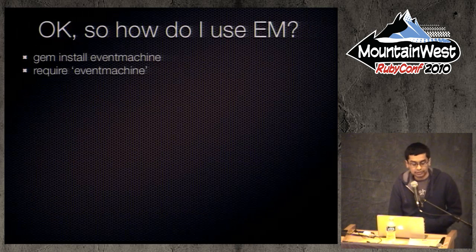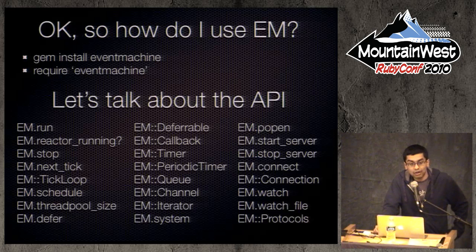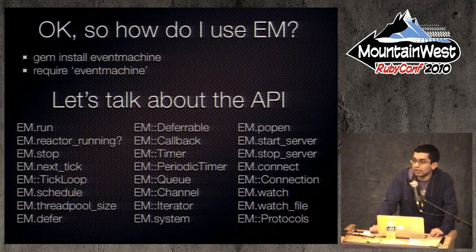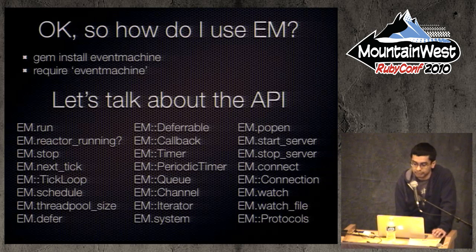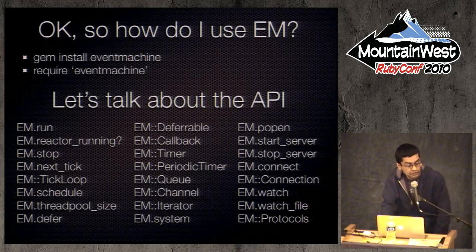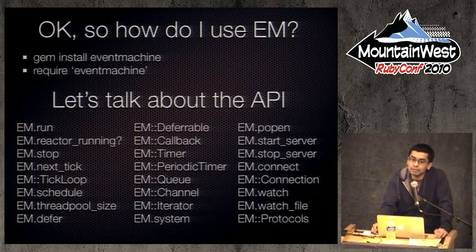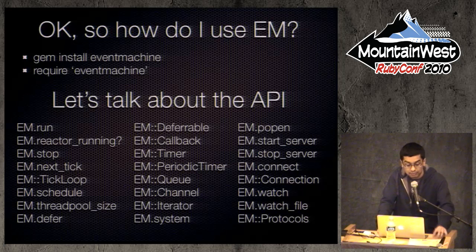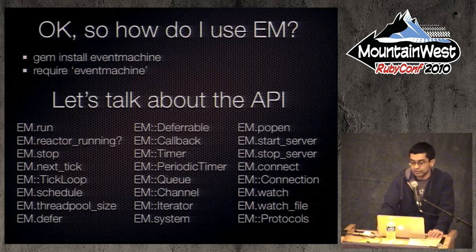How do you use Event Machine? Event Machine is just a gem — you can use it on Rubinius or JRuby. All you have to do is gem install, require it, and you can use it. Event Machine has a lot of different APIs. I'm going to breeze through many of them — the key thing to take away is to watch for common patterns. The patterns we use over and over again are usually to prevent blocking the reactor. Compare and contrast the blocking code you're used to writing versus how you'd write it asynchronously.